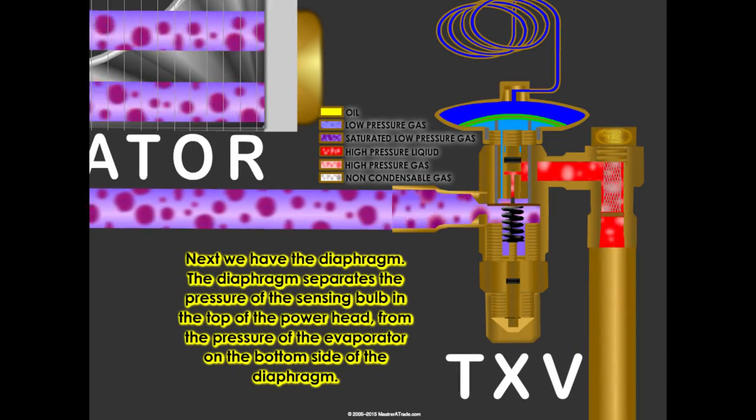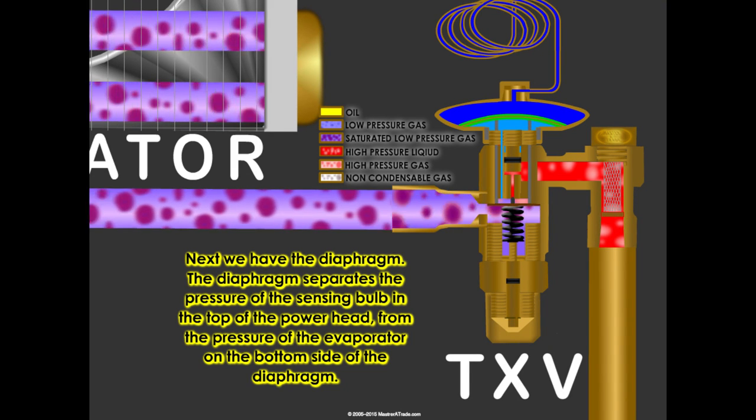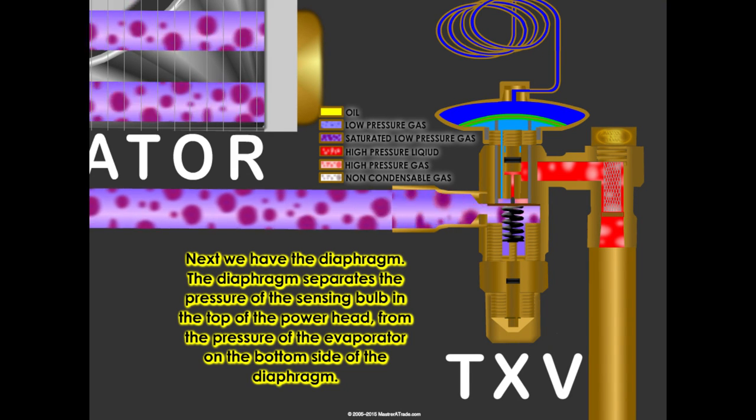Next, we have the diaphragm. The diaphragm separates the pressure of the sensing bulb in the top of the power head from the pressure of the evaporator on the bottom side of the diaphragm.